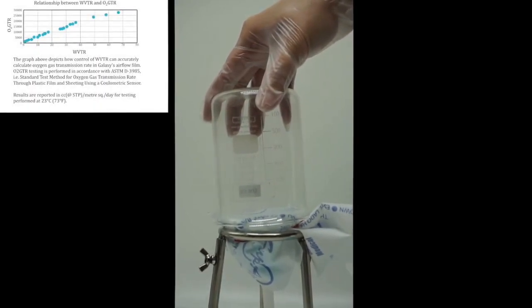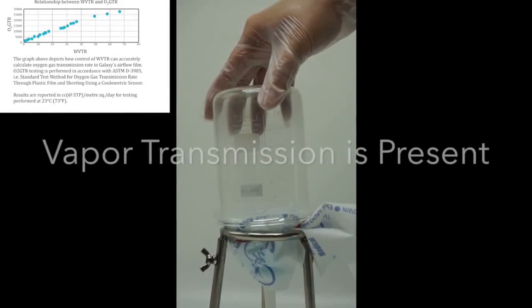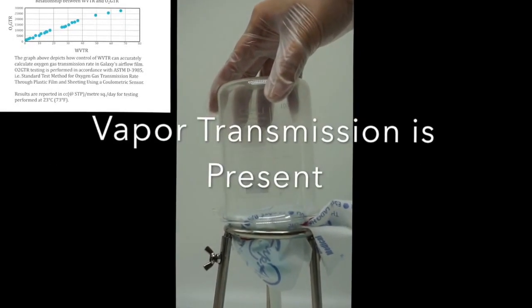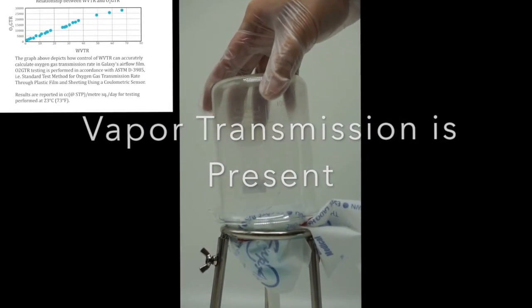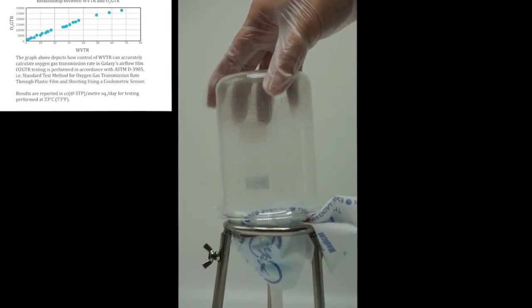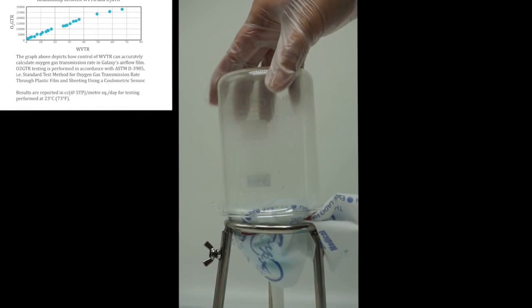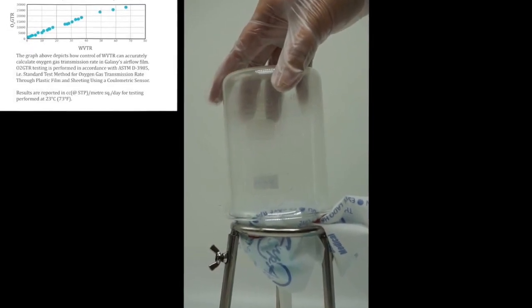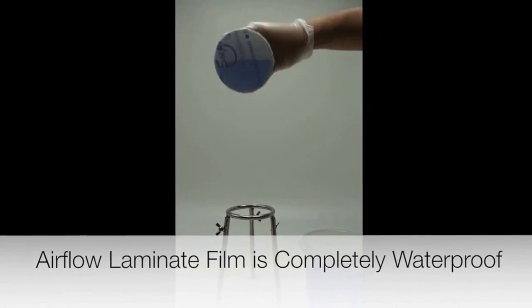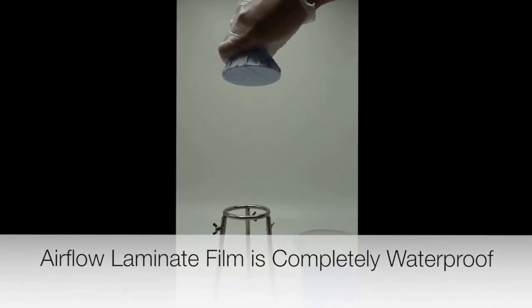As we can see, condensation builds up proving moisture vapor transmission is present. Even though the airflow film allows vapor molecules to pass through, the film is completely waterproof as this next demonstration shows. There is no strikethrough or leakage.